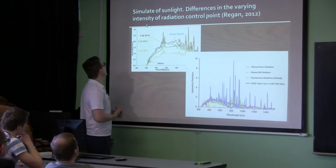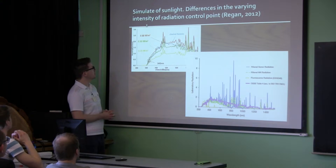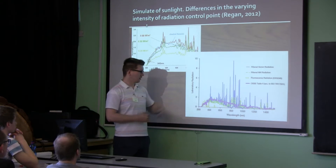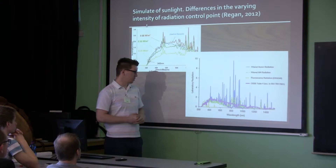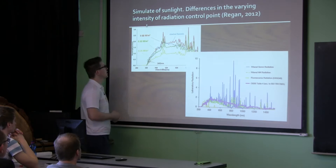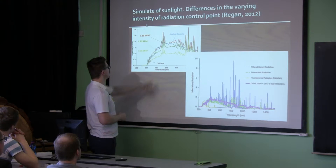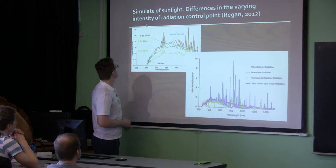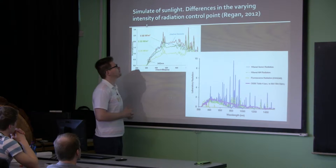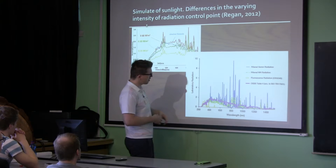Please pay attention to these two graphs. Visually, when the Xenotest Chamber is on, we usually operate around 340 nanometers — this is the wavelength. This graph is from the VELAP page, and this one is from the Atlas page. They are very similar.